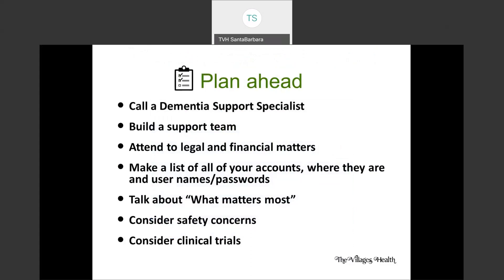That leads us to planning ahead. This list on the slide is a culmination of many different things you'll need to consider. Perhaps you've already addressed some of them in your normal end-of-life planning. If you haven't, it's critical that you turn your attention to that. A person might lose their ability to make safe decisions, so you need to make sure you've already had some of these conversations. In terms of medical and financial powers of attorney, because a person's ability to communicate might be compromised, it's critical that you have those pieces in place ahead of time so you can step in and support them in making decisions.